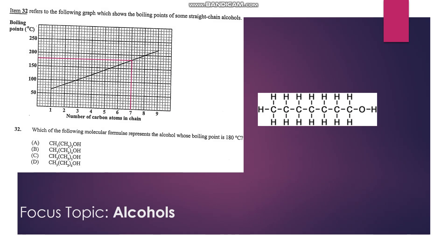Number 32 refers to the following graph which shows the boiling points of some straight chain alcohols. Which of the following molecular formulas represents the alcohol whose boiling point is 180°C? We're looking at 180 and the graph corresponds to seven carbon atoms, so we look for the option with seven carbon atoms—that's D.